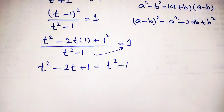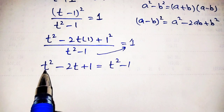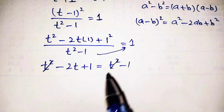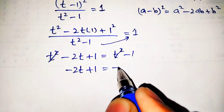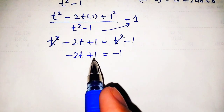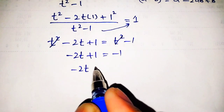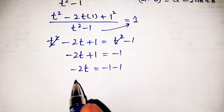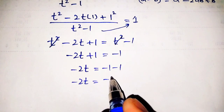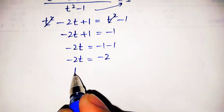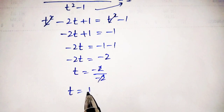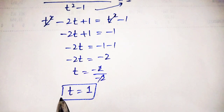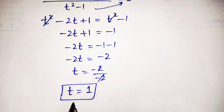We can see that on both the left-hand and right-hand sides there is a t squared term. Both t squared terms cancel out, leaving minus 2t plus 1 equals minus 1. Taking 1 to the right-hand side gives minus 2t equals minus 2, so we get the final value of t equals 1.